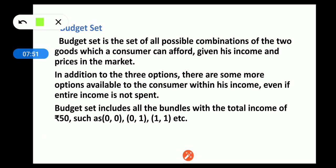Now, what is the budget set? The budget set is the set of all possible combinations of the two goods which a consumer can afford, given his income and prices in the market — all the possible combinations of the two goods a consumer can afford given his income and prices.